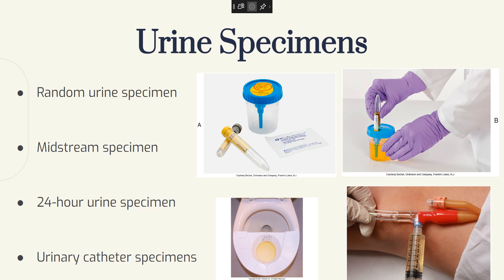To collect a random urine specimen, you identify yourself and explain the procedure. Provide for privacy. Wash hands and put on gloves. Assist the resident to the toilet or provide the bedpan or urinal, and instruct the resident to urinate. Put toilet paper in the trash for disposal. Remove gloves and wash hands, then assist the resident to return to a comfortable position. Put on clean gloves, pour urine into the specimen cup until half full, place the lid on the cup and label immediately. Remove gloves and wash hands. Place the call bell within easy reach of the resident and document the procedure.